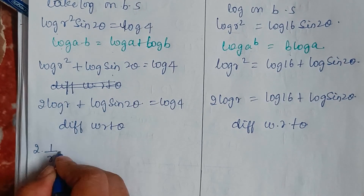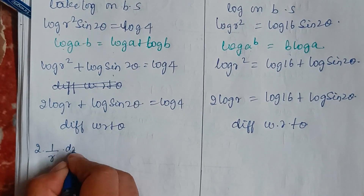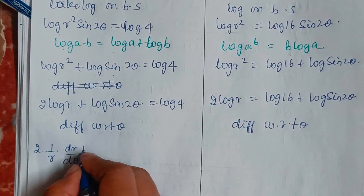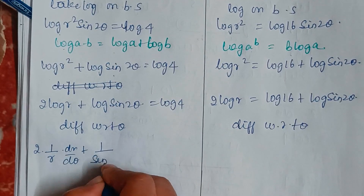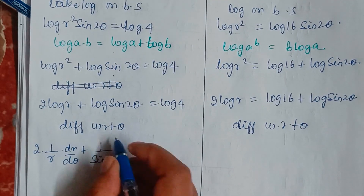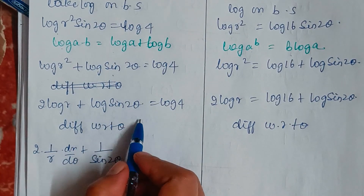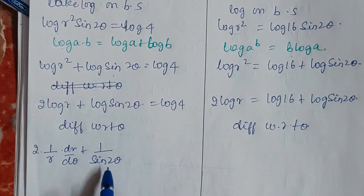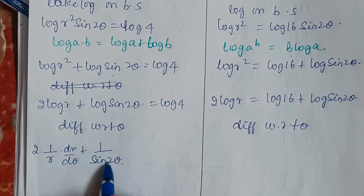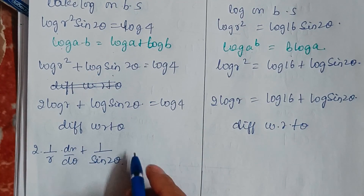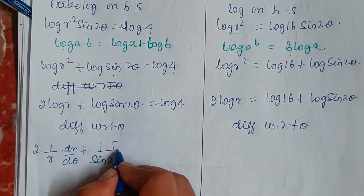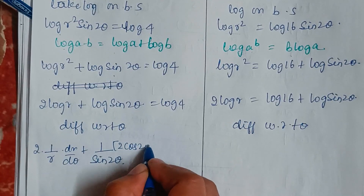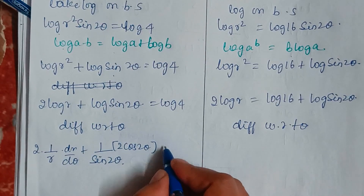Differentiating with respect to theta: the derivative of log r gives (1/r)(dr/dθ), and the derivative of log sin(2θ) is (1/sin(2θ)) · 2cos(2θ).